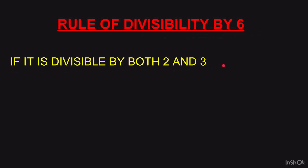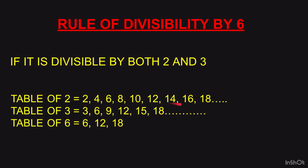Rule of divisibility by 6: if a number is divisible by both 2 and 3, then it is divisible by 6. Looking at the table of 2 (2, 4, 6, 8, 10, 12, 14, 16…) and the table of 3 (3, 6, 9, 12, 15, 18…), the common numbers are 6, 12, 18 — which are exactly the table of 6. So to check divisibility by 6, first check the rule for 2, then check for 3. If the number satisfies both, it is divisible by 6.